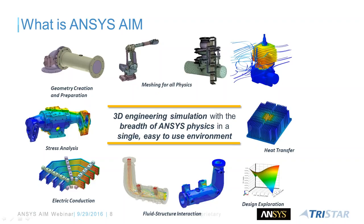The workflow covers everything from geometry creation and preparation — such as creating a fluid flow volume, de-featuring assemblies or parts — then proceeding to meshing, applying contacts on large assemblies, physics setup depending on the type of physics you'd like to analyze, and then solution and post-processing of results. Whether it's fluid flow, stress analysis, heat transfer, or electric conduction, AIM handles it. You can also do multi-physics, such as applying fluid flow results to a structural analysis to see stress on a part.